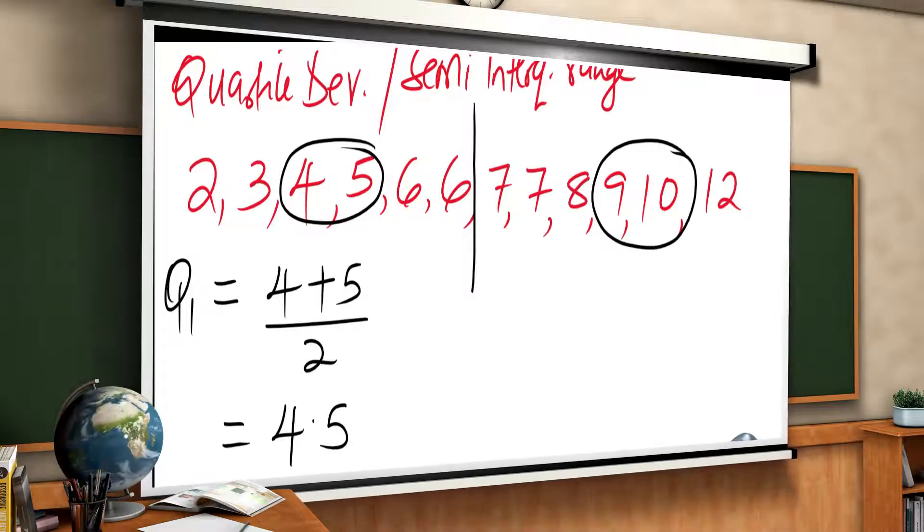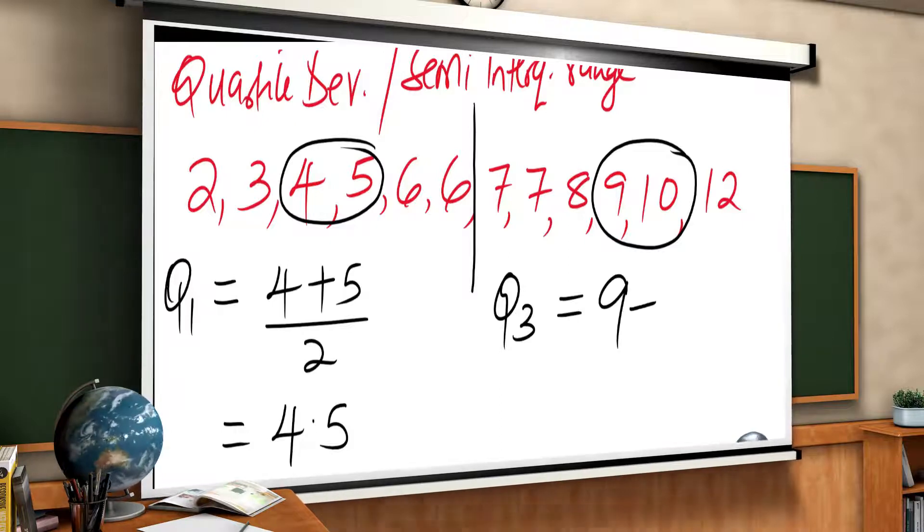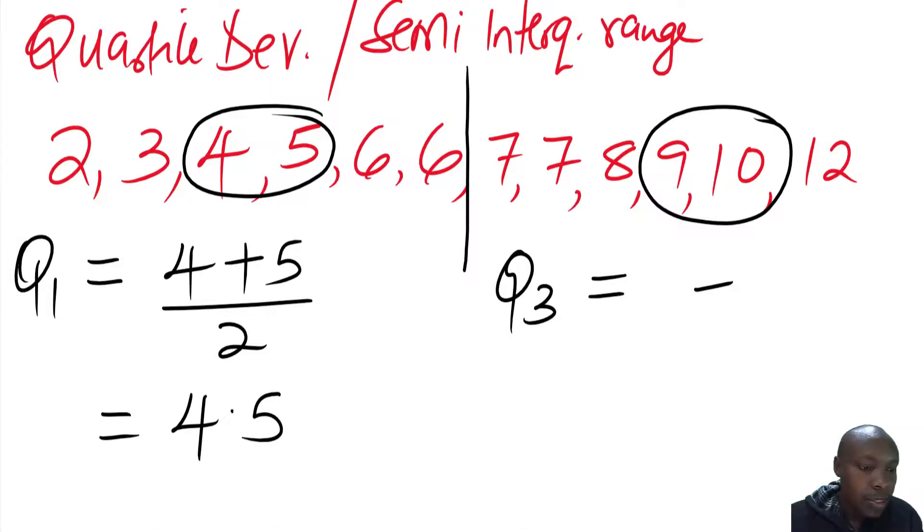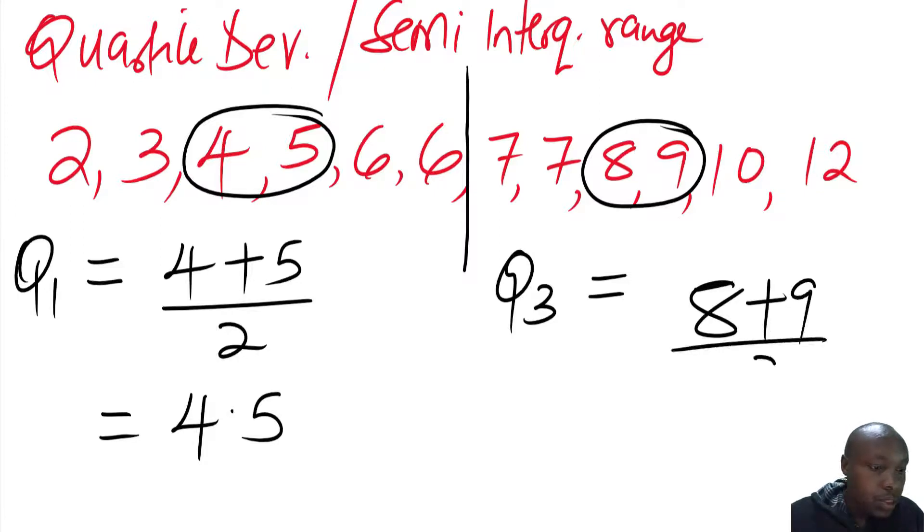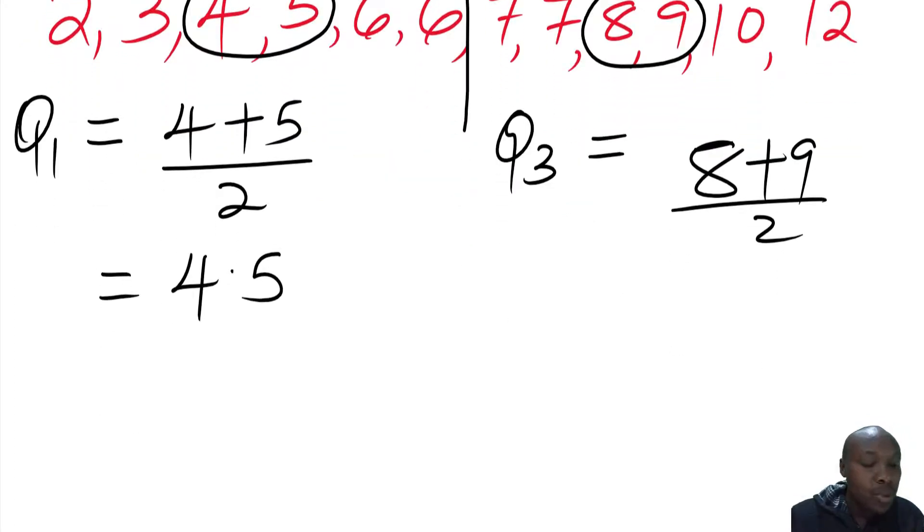Then we get the Q3 now, which is the median of the upper half, which is 9 plus 10. Now I'm sorry, I think this one is not 9 plus 10. There's something here I've not identified properly. So the median here will be given by 8 plus 9. So it will be 8 plus 9, divided by 2. And this will give, 17 divided by 2, will give 8.5.